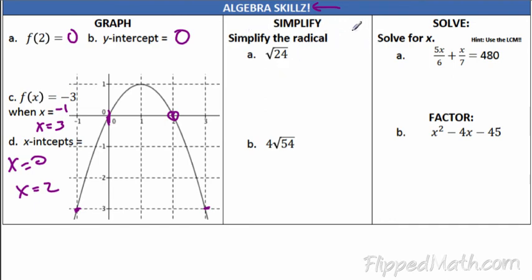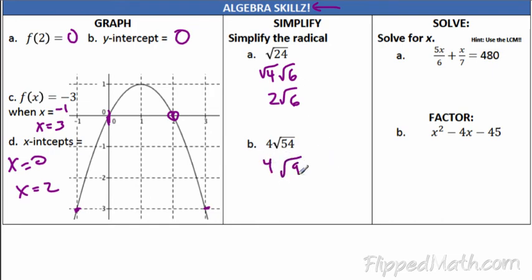Simplify the radical. Remember the perfect squares. For the first one, break it down: the first perfect square factor is 4 times 6, so √24 = 2√6. For part B, you have 4 out front and then 9 times 6 under the radical, giving 4 times 3 times √6, which is 12√6.